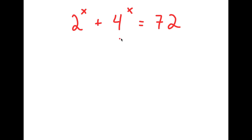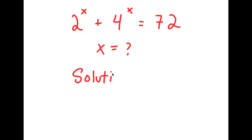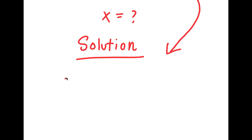So in this problem, I have 2 to the power of x plus 4 to the power of x is equal to 72. I want to find the value of x. For my solution, I'm going to start by rewriting my equation: 2 to the power of x plus 4 to the power of x is equal to 72.